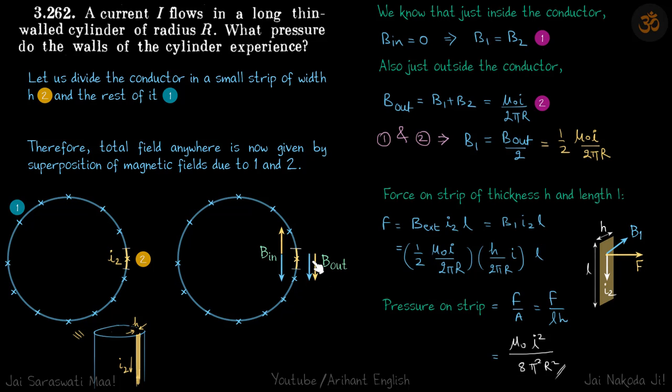Just outside the conductor, the total field is by adding both of them. Because of the strip, field will be just reverse in direction but same magnitude. Because of the rest of the conductor, field will be the same just inside and just outside.